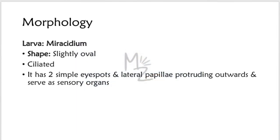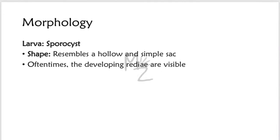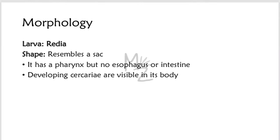The first larval stage is Miracidium, which is slightly oval, ciliated, and has two simple eye spots and lateral papillae protruding outwards that serve as sensory organs. Next is Sporocyst, which resembles a hollow and simple sac — oftentimes the developing Redia are visible inside. Next is Redia, which resembles a sac; it has a pharynx but no esophagus or intestine, and the developing cercariae are visible in its body.